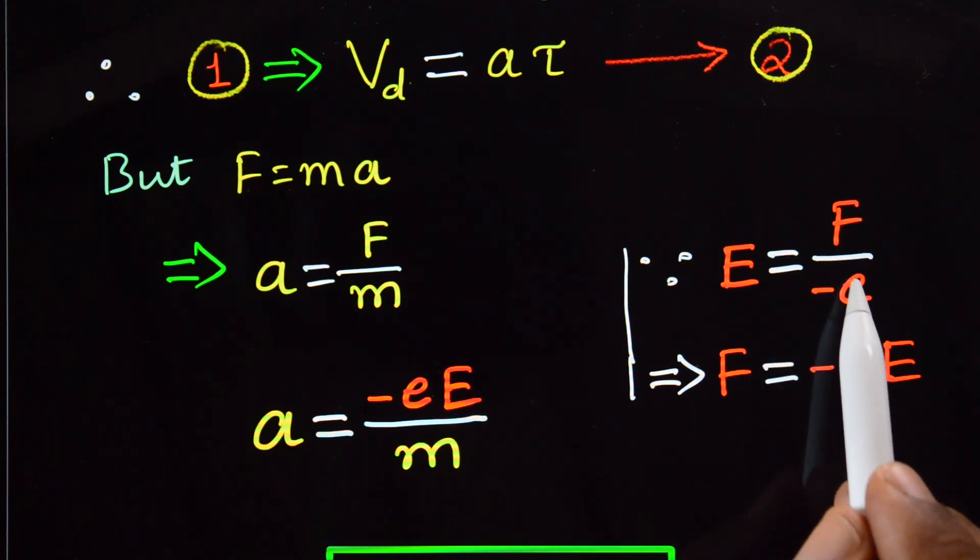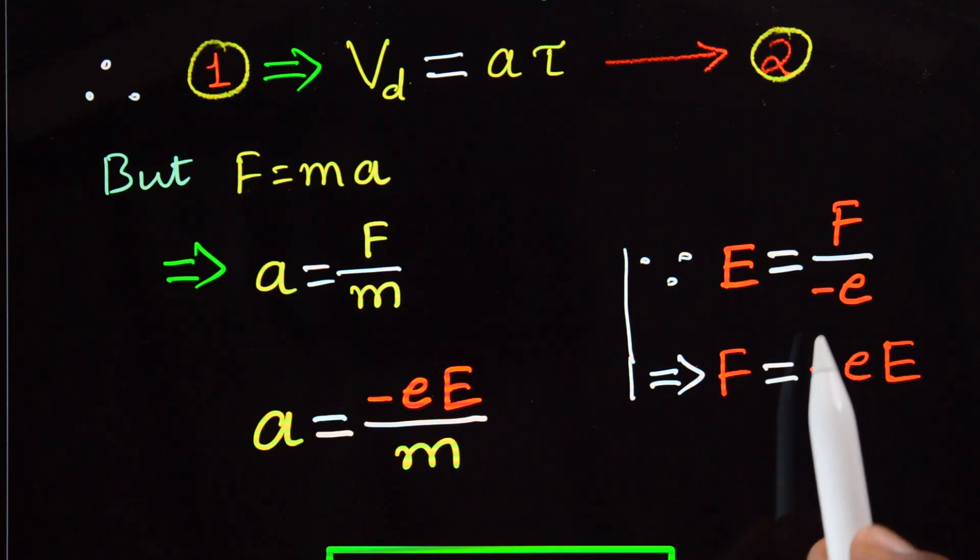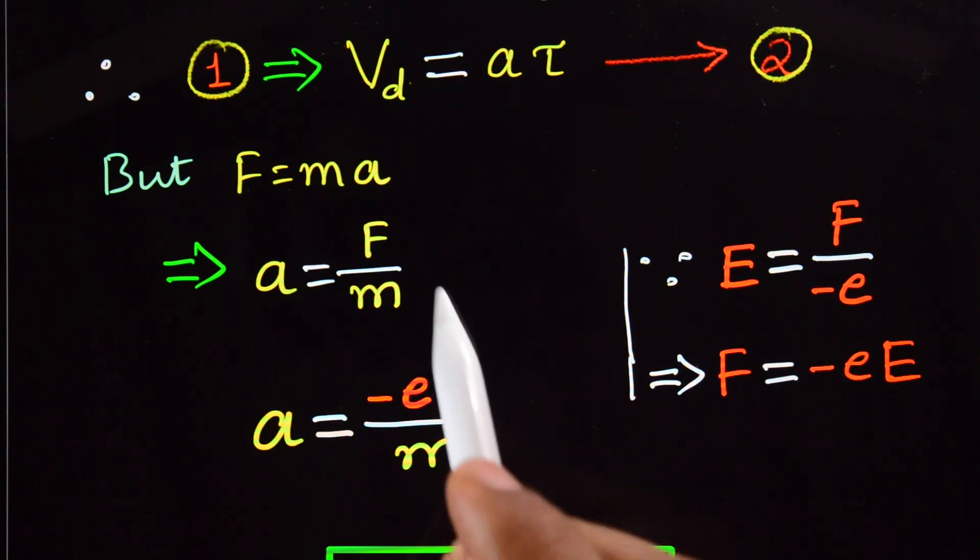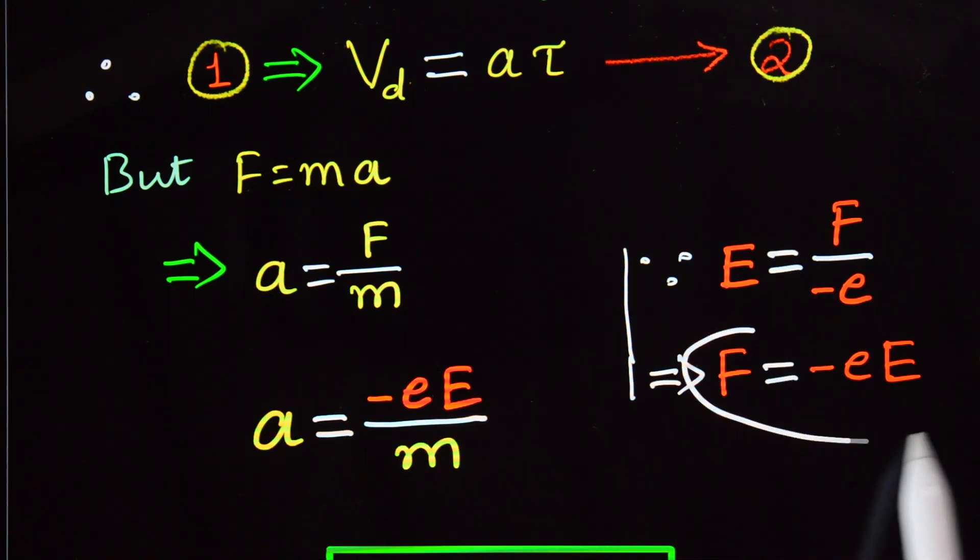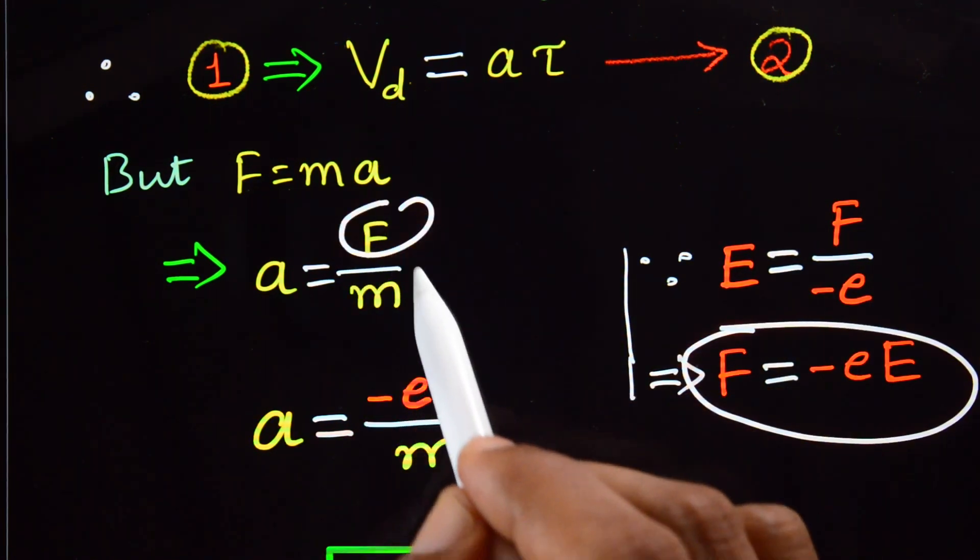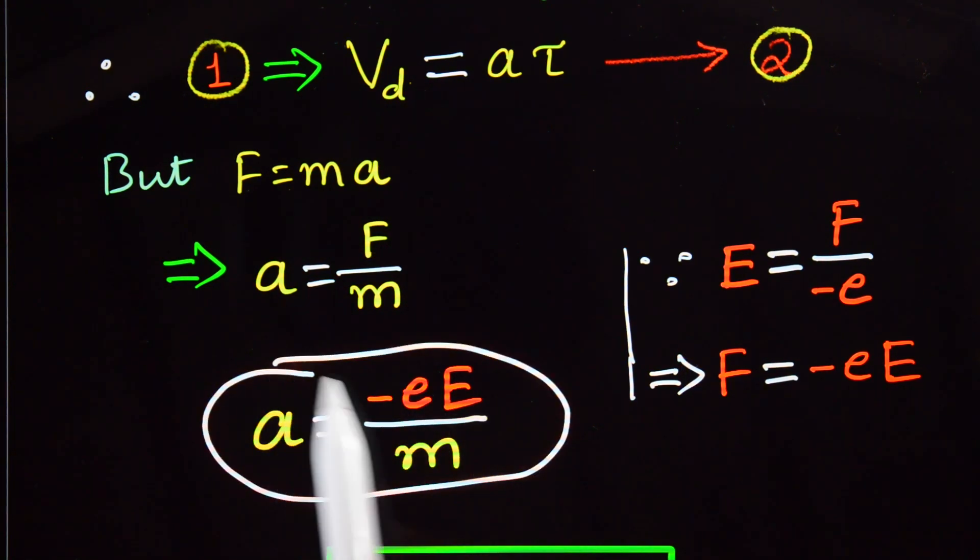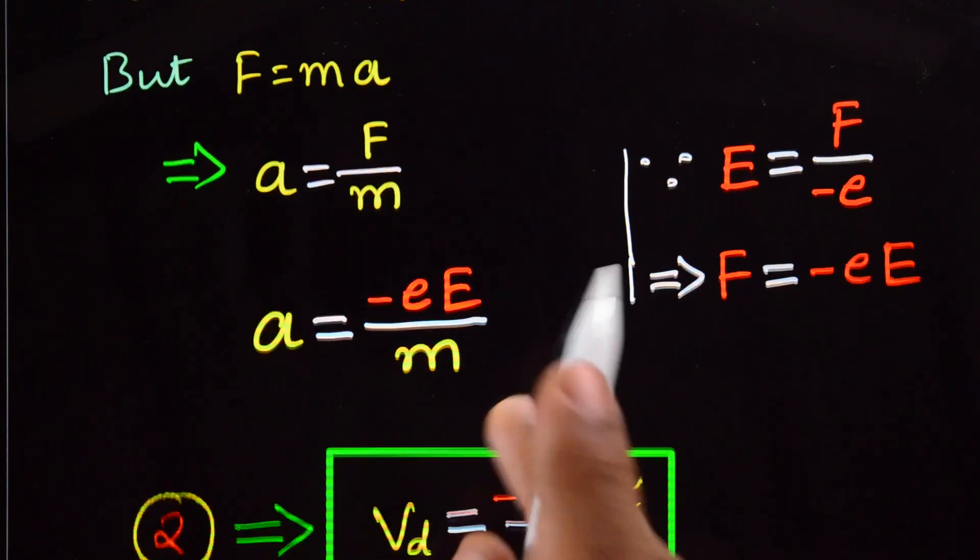From the electric field definition, E equals F divided by minus e, or that implies F equals minus e times capital E.